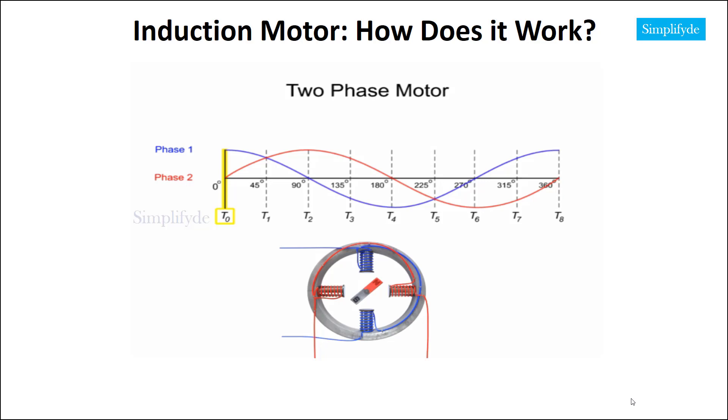At time 0, phase 1 produces maximum vertical magnetic flux and the rotor aligns itself vertically with the stator poles. Because phase 2 provides no current flow to the stators, there is no horizontal pole on the rotor.